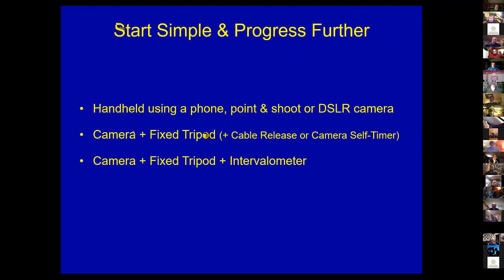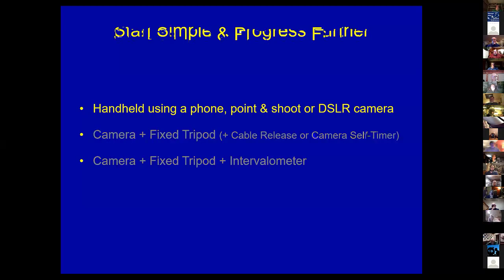We're going to start out by talking about using a handheld point-and-shoot camera, DSLR, or phone, then show examples of pictures taken using that technique. Then we'll go up a step and use a camera on a fixed tripod — no tracking mounts tonight. We'll look at accessories like a cable release or camera self-timer, and then add an intervalometer to expand the types of pictures you can take.